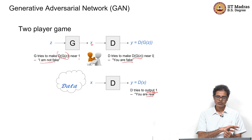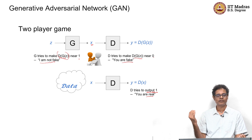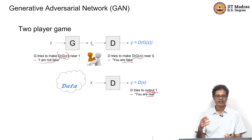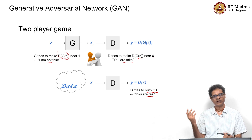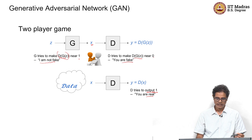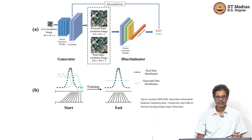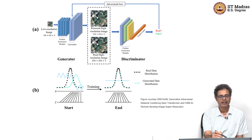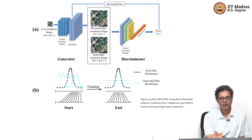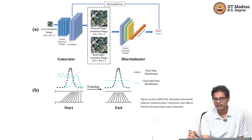They play a two-player game with a min-max loss. By solving that, the generator becomes able to produce very photorealistic images that the discriminator cannot catch. In our case, the input to the generator is the low resolution image, the output is the high resolution image, which is then passed through the discriminator to find out real or fake.